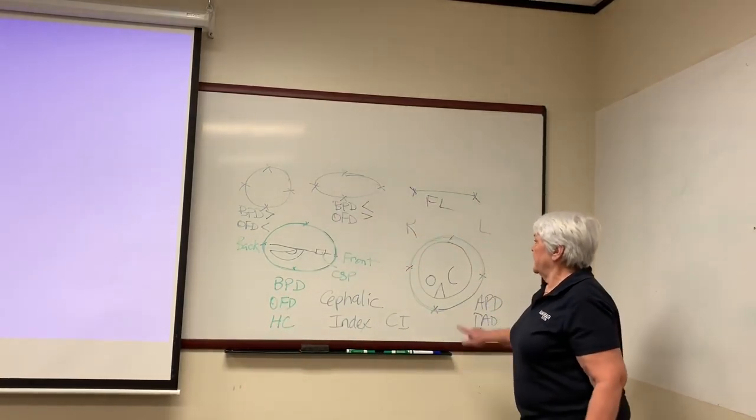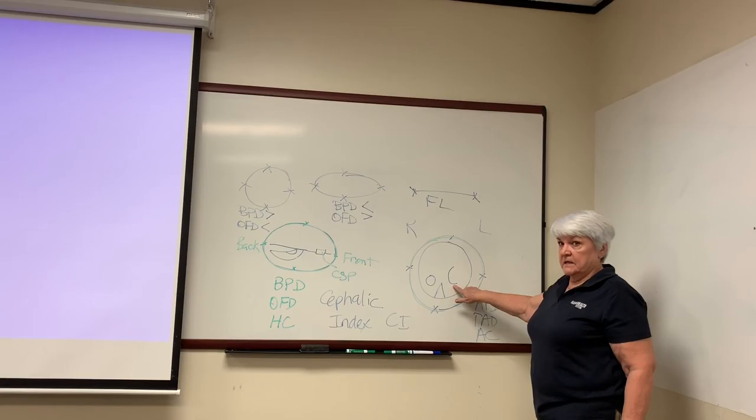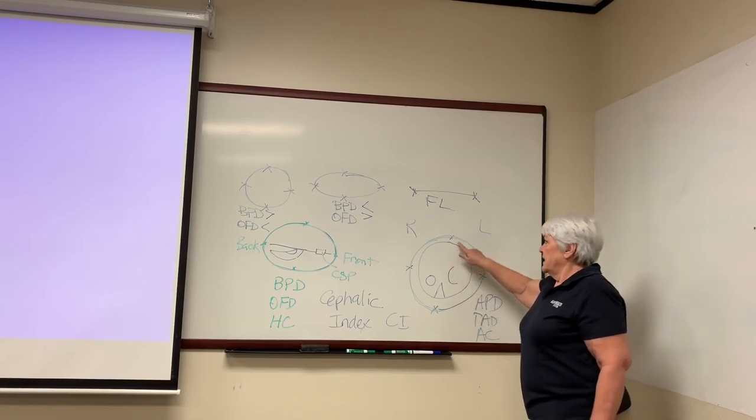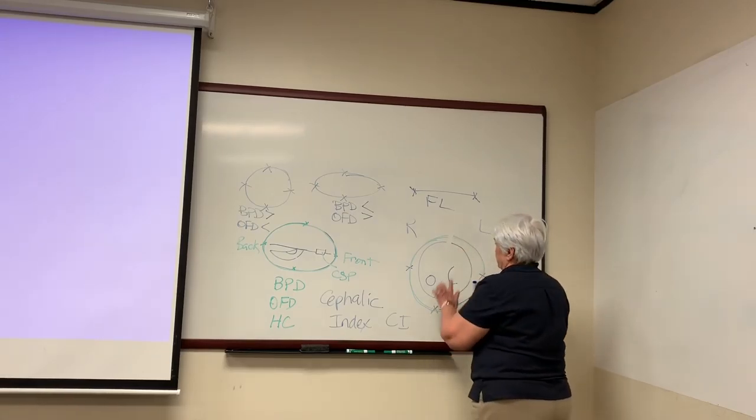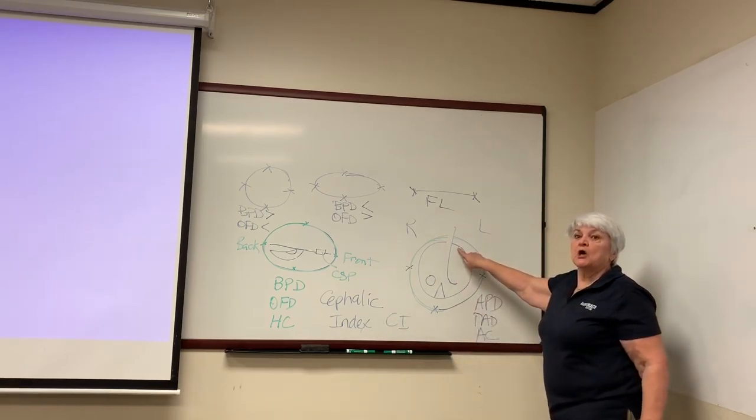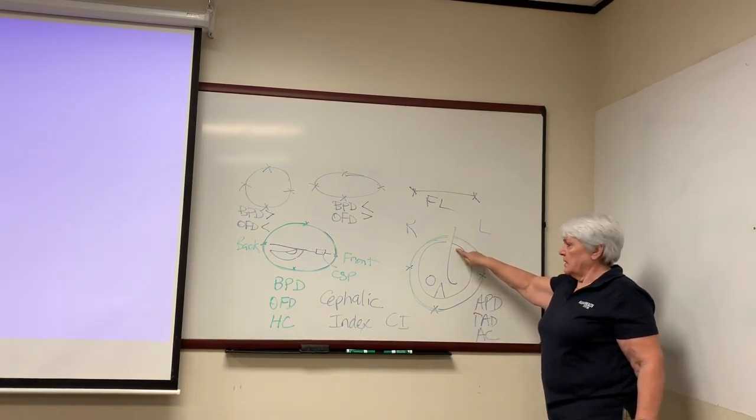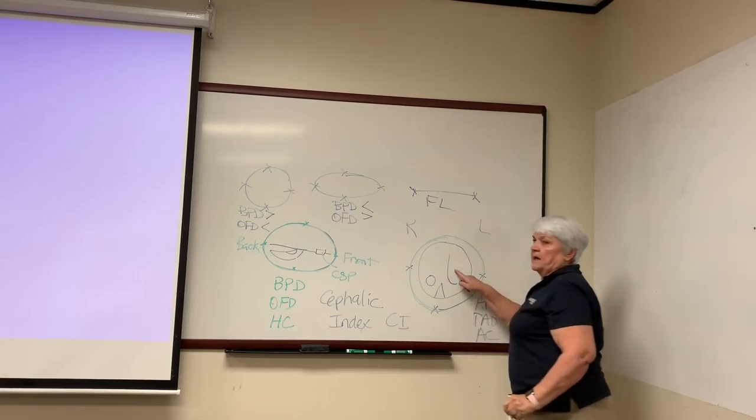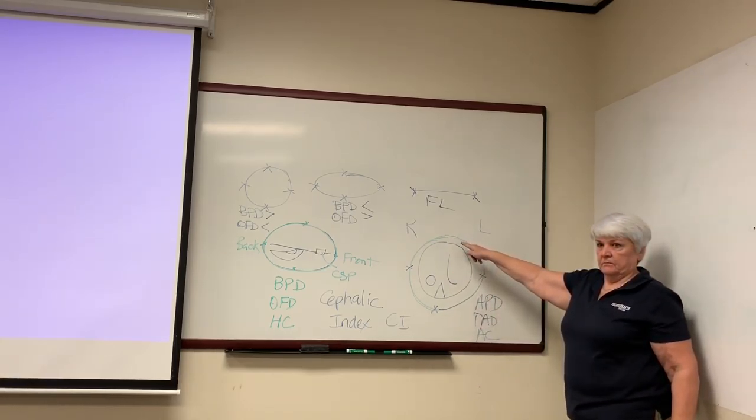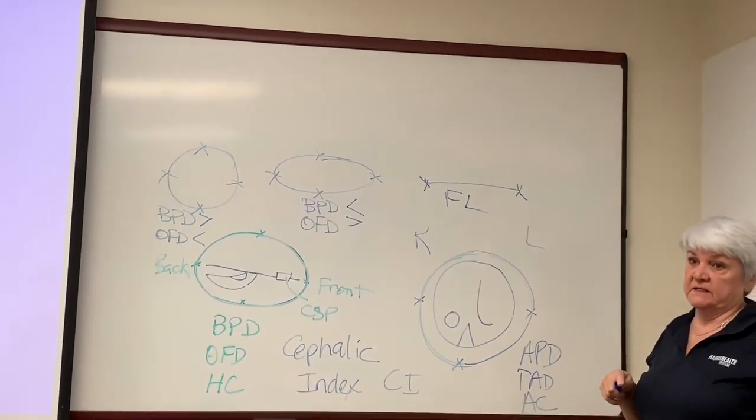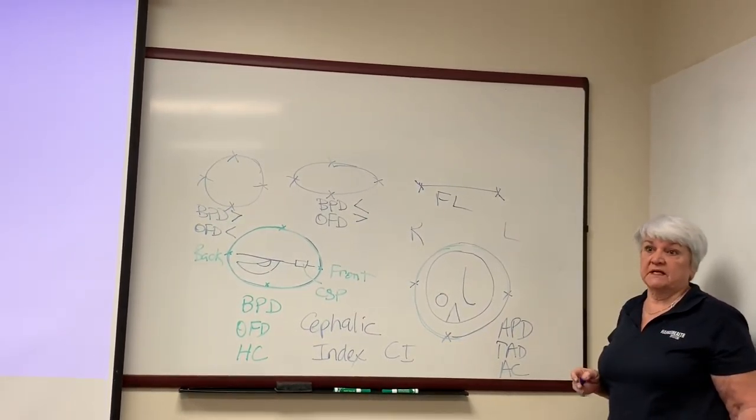I'm going to look at where the umbilical vein goes into the liver and joins the portal system. It's like a little hockey stick. If I see this, I'm too low. I want to come up on the baby because I don't want to see the umbilical cord going into the skin at this level. I am going to do a cord insertion into the fetus and also a cord insertion into the placenta.